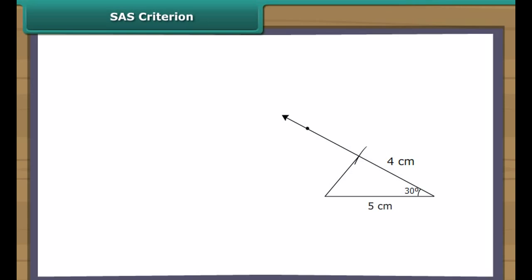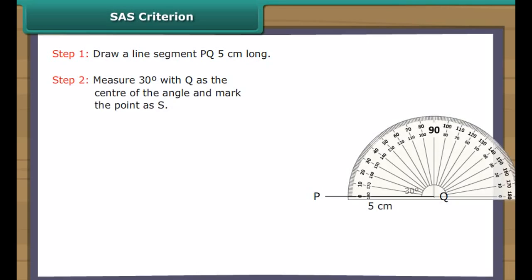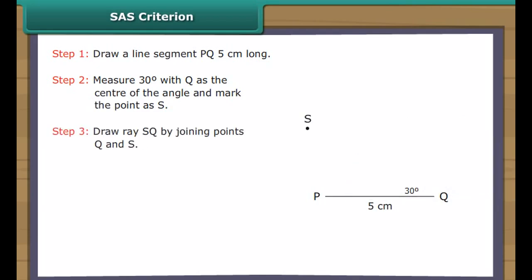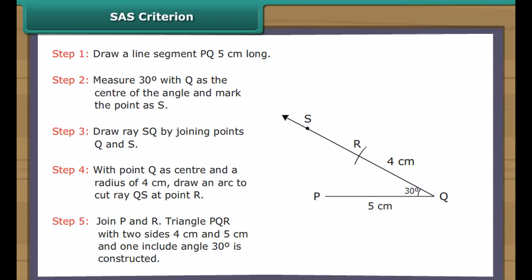SAS criterion. Let us now draw a triangle whose two sides measure 4 cm and 5 cm, and the included angle measures 30 degrees. Draw a line segment PQ 5 cm long. Measure 30 degrees with Q as the center of the angle and mark the point as S. Draw ray QS by joining points Q and S. With point Q as center and a radius of 4 cm, draw an arc to cut ray QS at point R. Join P and R. Triangle PQR with two sides 4 cm and 5 cm, and one included angle of 30 degrees is constructed.